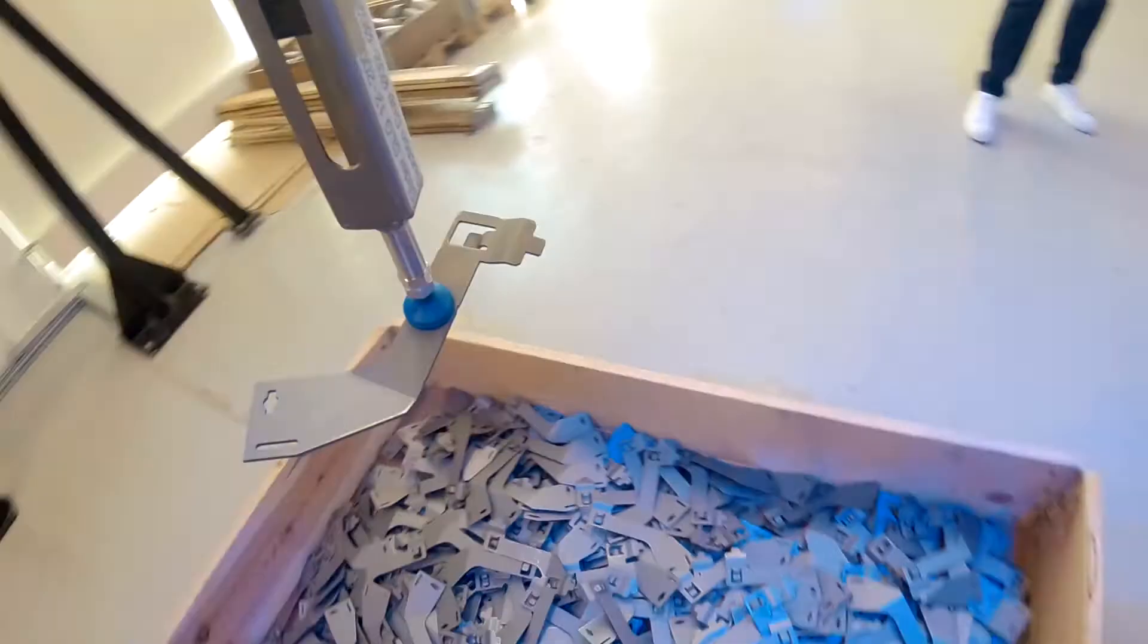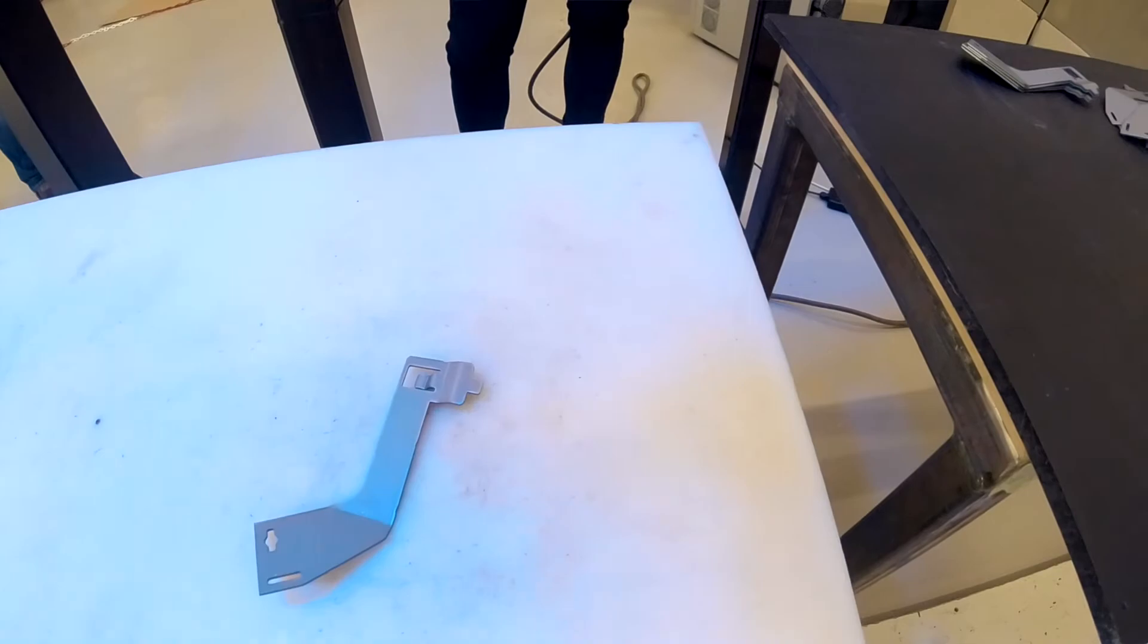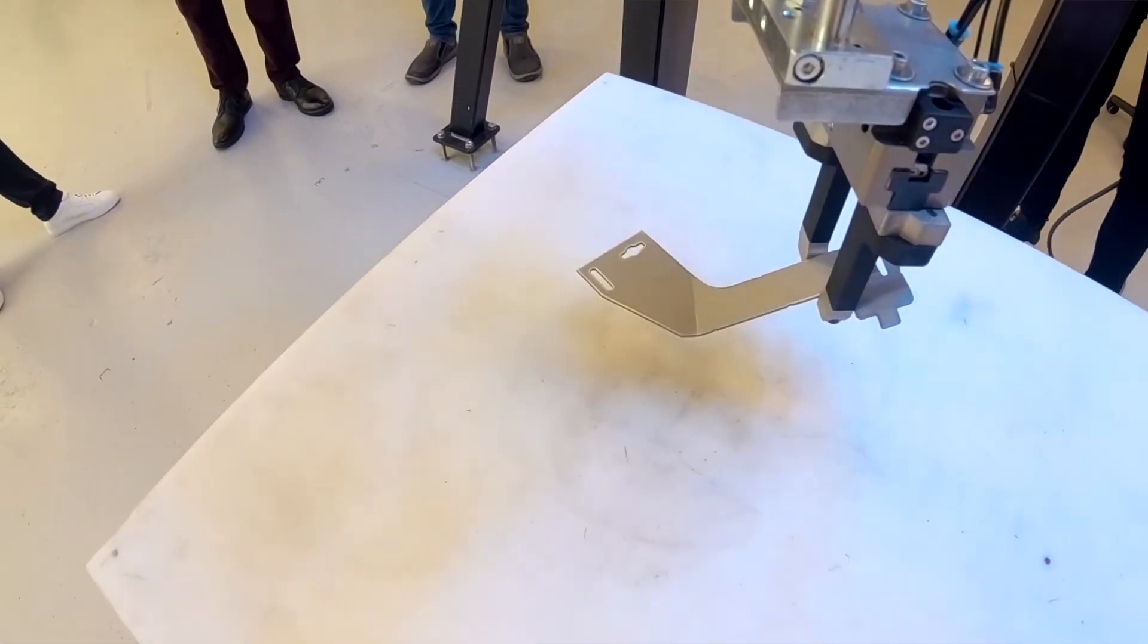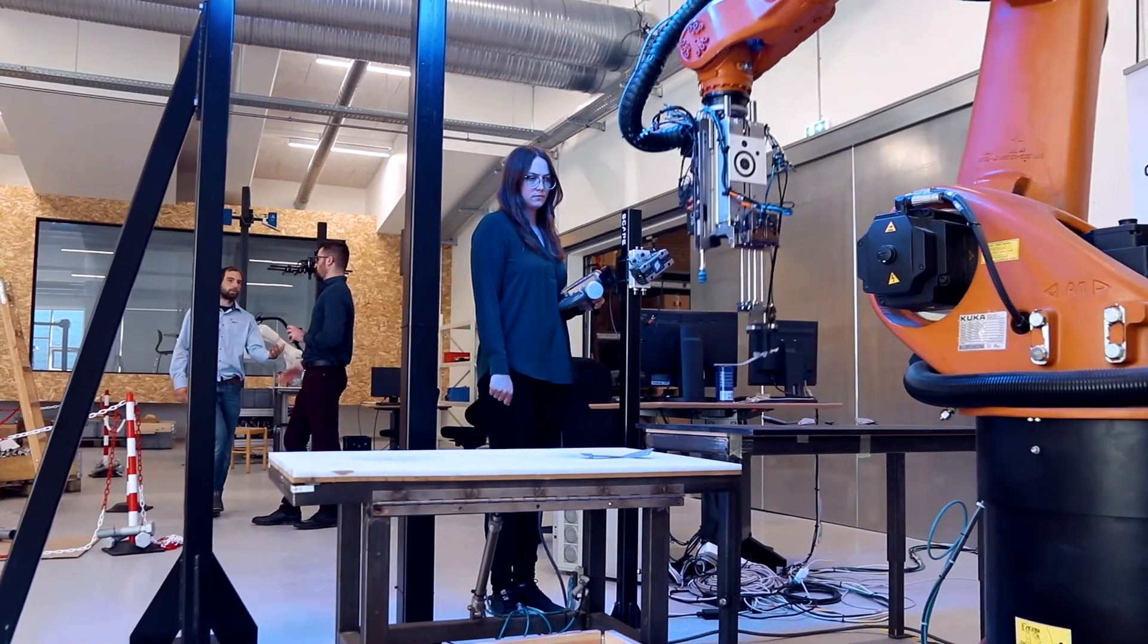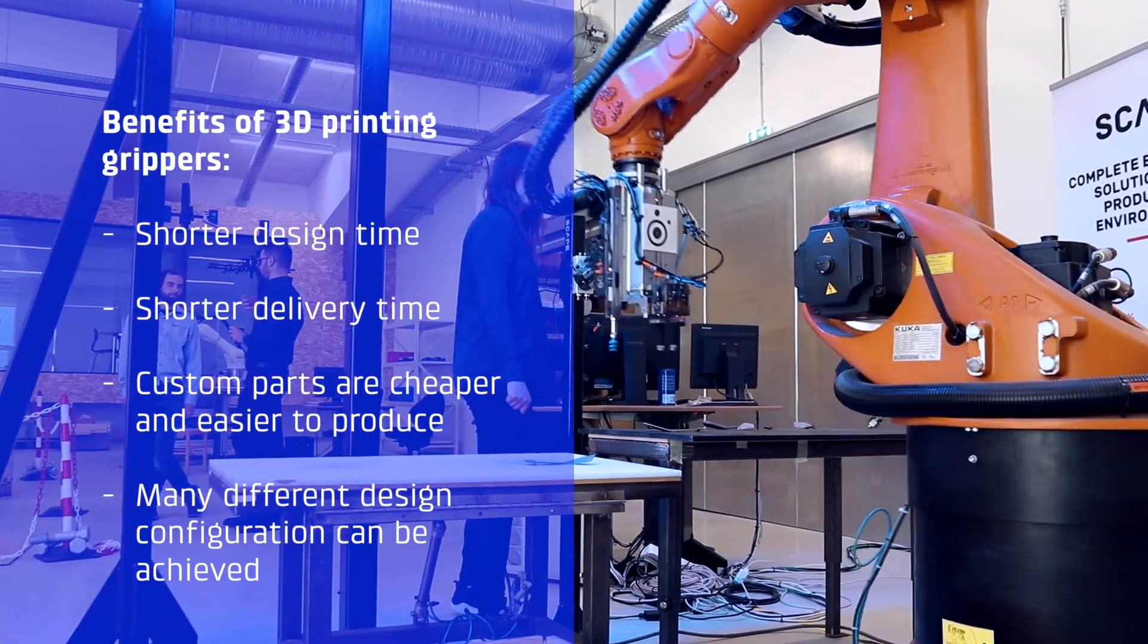In general 3D printing is good for grippers because it's typically a smaller number of parts you need and you can do the design optimization really quickly. From the design of these grippers to the test you can really squeeze that time down a lot using 3D printing.